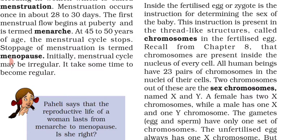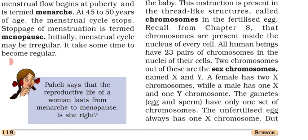In human beings, there are a total of 23 pairs of chromosomes. If counted individually, the quantity is 46, but counted in pairs it is 23 pairs. Out of these 23 pairs, two chromosomes are known as sex chromosomes, and they determine the sex of the baby.